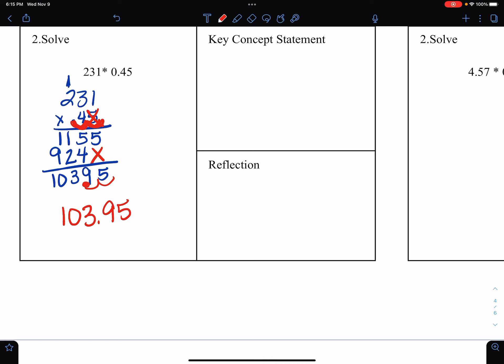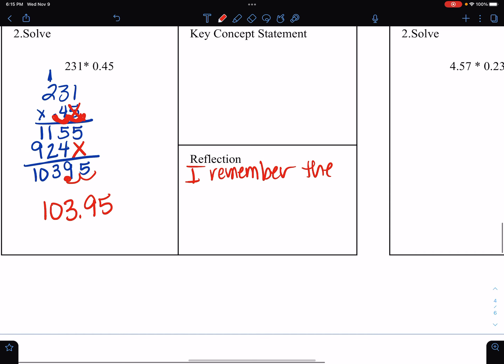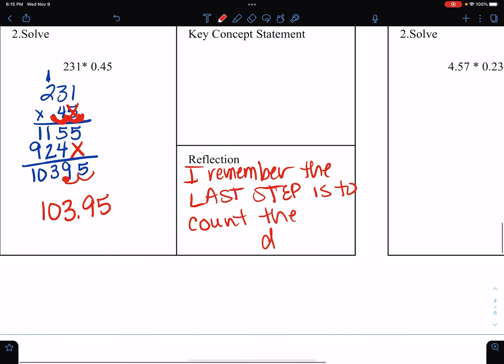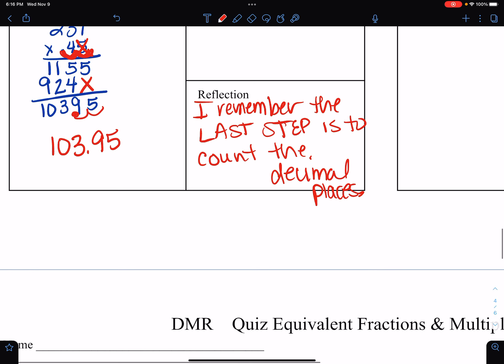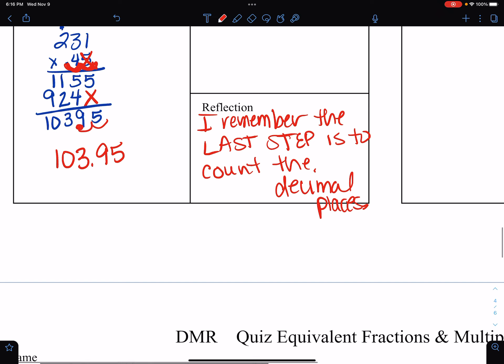I remember the last step is to count the decimal places. I'm going to scroll this up so that you can push pause if you need to, and that is the end for number seven.